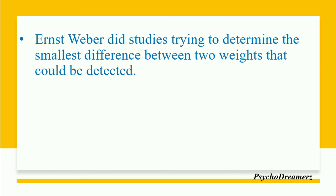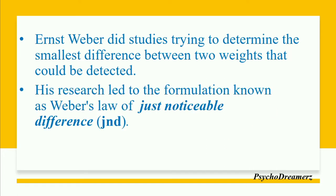Ernst Weber did studies trying to determine the smallest differences between two weights that could be detected. Suppose you have two different sizes of stone — how much weight difference should there be before you can feel and sense that both of them are different, without being told the exact amounts? This research led to the formulation known as Weber's Law of Just Noticeable Difference, or JND.